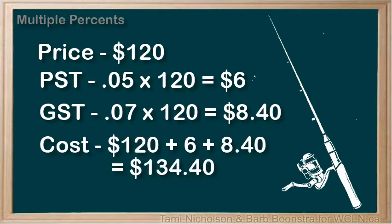To find the total cost of the fishing rod, add the price of the rod, $120, the PST, $6, and the GST, $8.40, to get a total of $134.40. Notice that in this example, the percentages are both calculated on the original amount, $120.